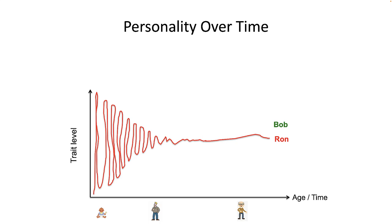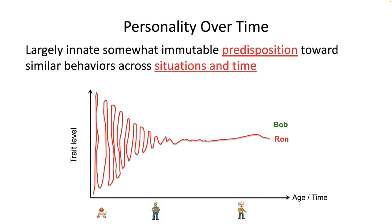Let's start with a simple definition of personality. Personality is a largely innate, somewhat immutable predisposition towards similar behaviors across situations and time. I say largely innate because numerous studies of identical twins reared apart by different parents have revealed that these genetically identical people share over half of the variability in their traits with each other — someone whom they have never met. In actuality, it's around 51% of one's personality that is caused by genetics and the other 49% is a result of one's environment.